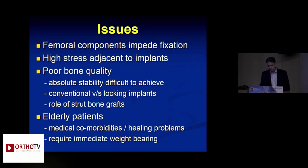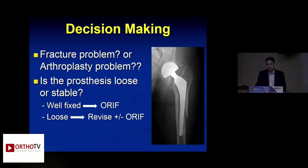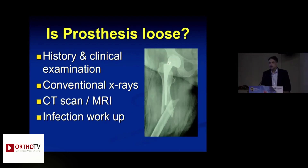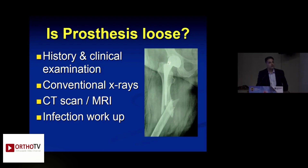The most important decision when dealing with a periprosthetic fracture is knowing whether the indwelling stem is loose or well fixed, because that will decide how you treat these injuries. If well fixed and stable, you retain the prosthesis and fix the fracture. If loose, you revise with or without additional fixation. Clinically, history and examination give clues, but about 20% of stems thought to be well fixed were found loose at surgery.